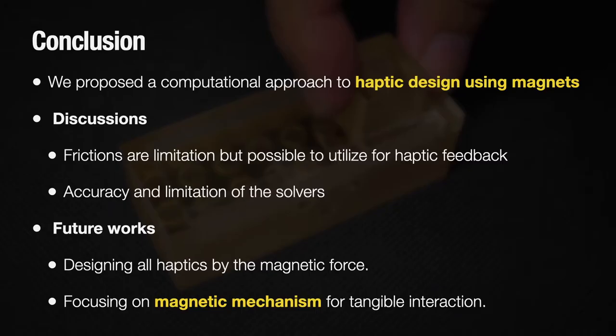In conclusion, we propose the computational approach to haptic design using magnets. As discussions, frictions are limitations, but we think it is possible to utilize them for haptic feedback. Please find discussion on the accuracy and limitation of the solvers. As future works, we are going to design all haptics by the magnetic force and focus on the magnetic mechanism for the tangible interaction.